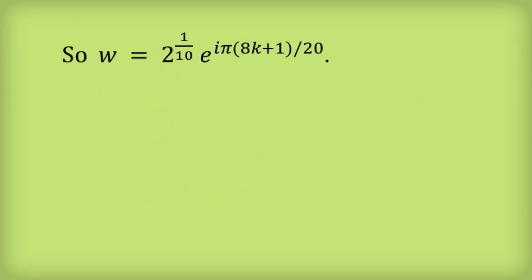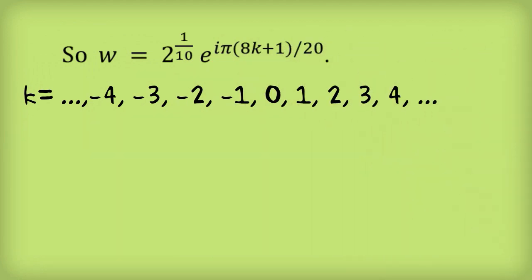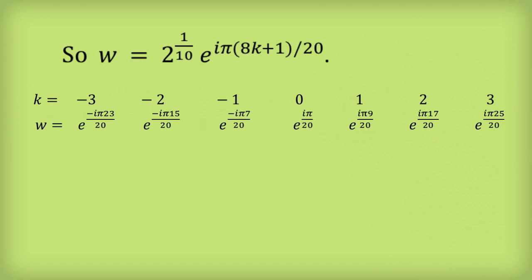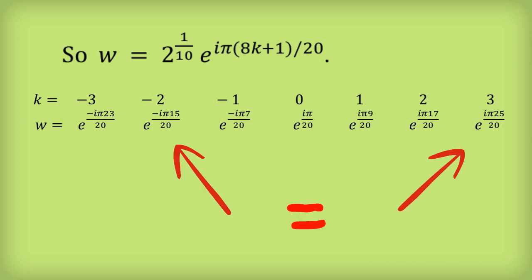Now, normally we can't stop there, so let's think about this. This is for any integer k, so there's an infinite number of k values, giving an infinite number of values for w, it would seem. But if we put down a few values of k — I've listed k from minus 3 to 3 and the corresponding w values — and look at these powers of e, you can see that negative pi times 23 on 20 is actually the same as pi times 17 on 20. Similarly, these two pairs are the same.